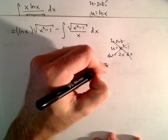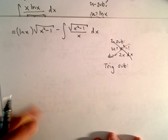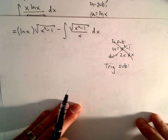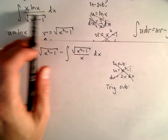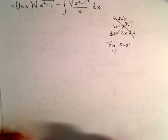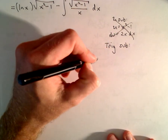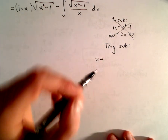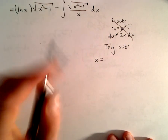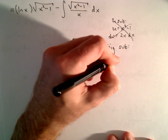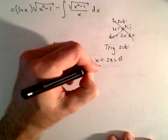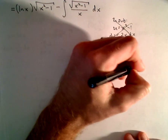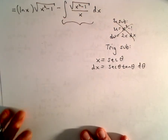I think this is probably going to require a trigonometric substitution. We often use trig substitutions when we have quadratics floating around — in this case, x²-1. I would have thought about a trig substitution at the beginning, except that ln(x) was in the original integrand. So let's try x = sec(θ). Then dx = sec(θ)tan(θ) dθ.